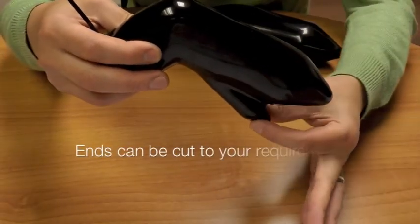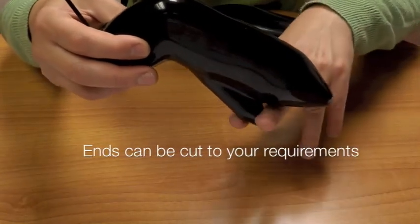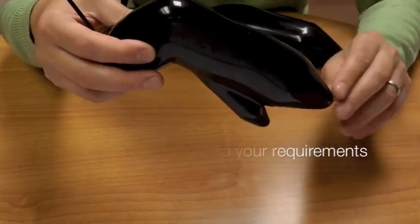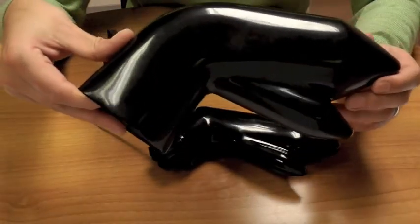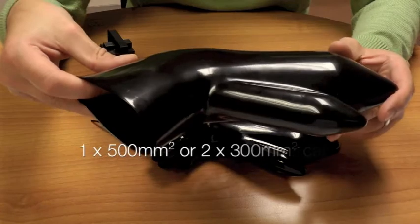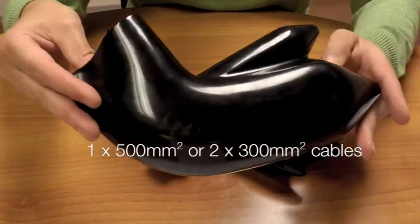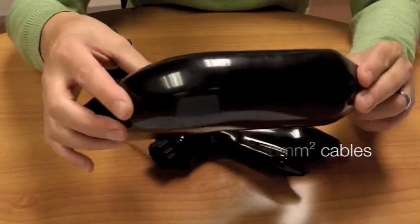The ends of these boots can then be cut away to suit the user's requirements. The B450 boot can accommodate up to one 500mm square cable or two 300mm square cables.